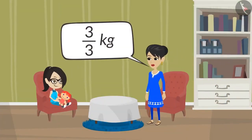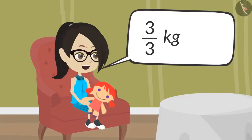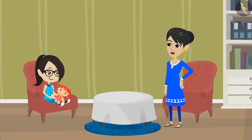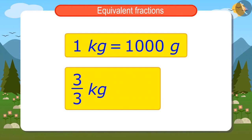Vandana, go get 3 upon 3 kilograms of potatoes from the market. Mammy, please tell me in grams, how many grams of potatoes are in 3 upon 3 kilograms? Vandana, you know about fractions, right? One kilo has thousand grams. So now you find out how many grams will be there in 3 upon 3 kilograms and bring that much of potatoes.